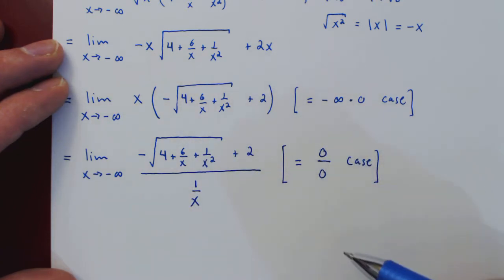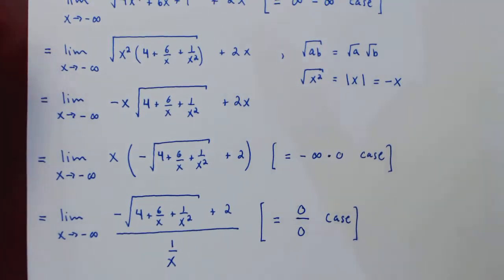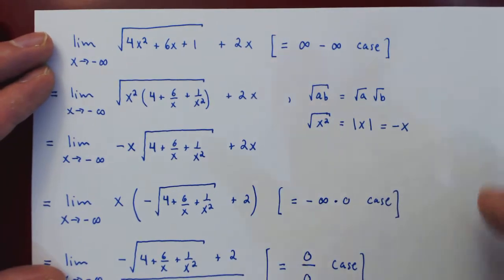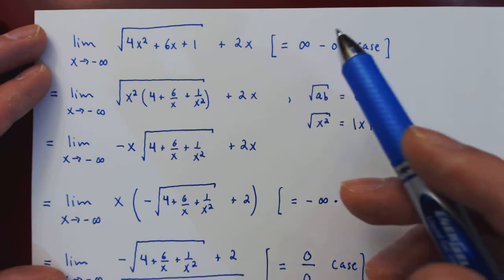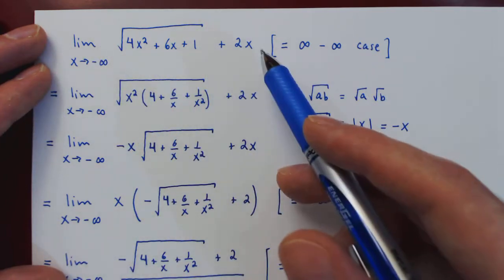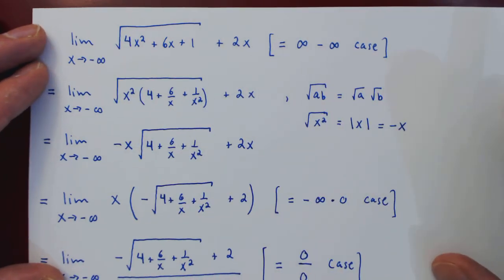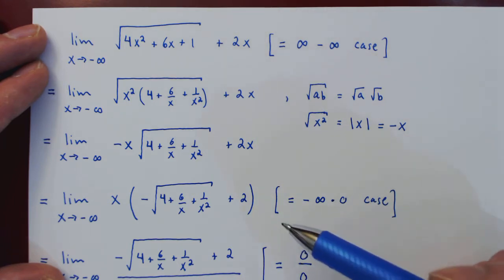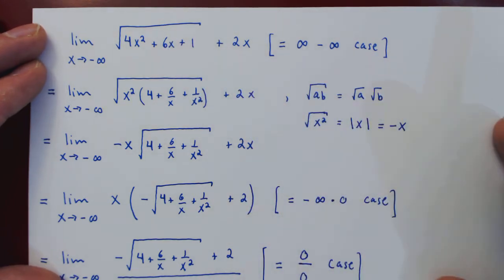Still a zero over zero case. And so at that point, we have to simply give up and admit that this direct approach of factoring will not yield an answer to this limit. So in the next video we will try a second approach to see if we can crack this problem.